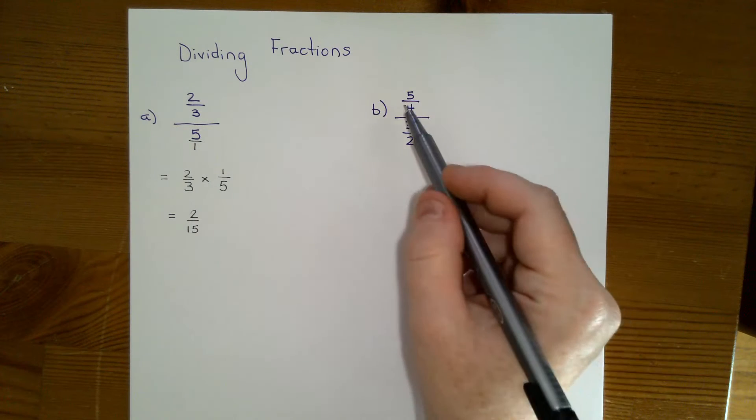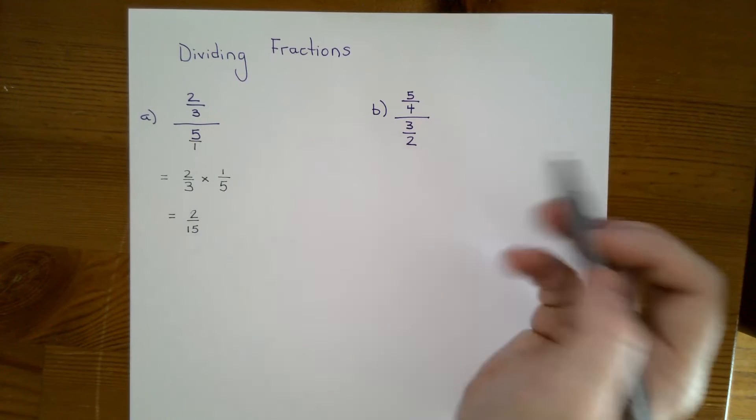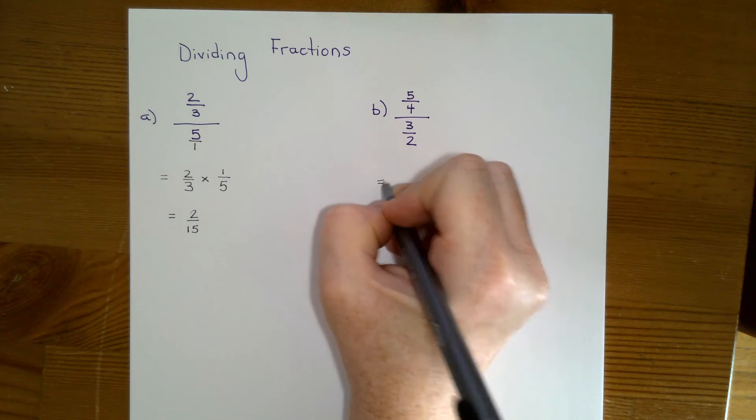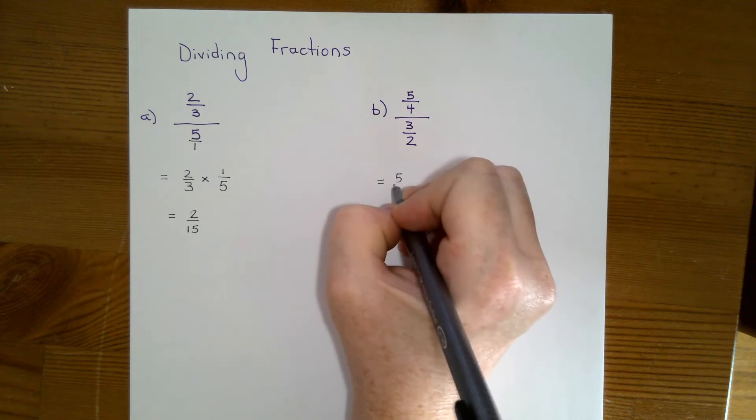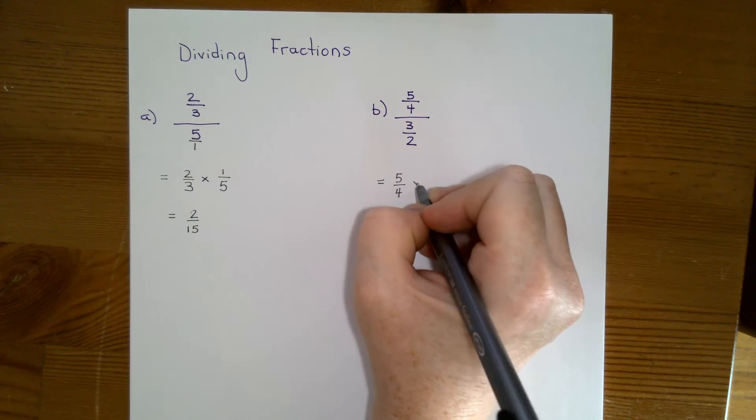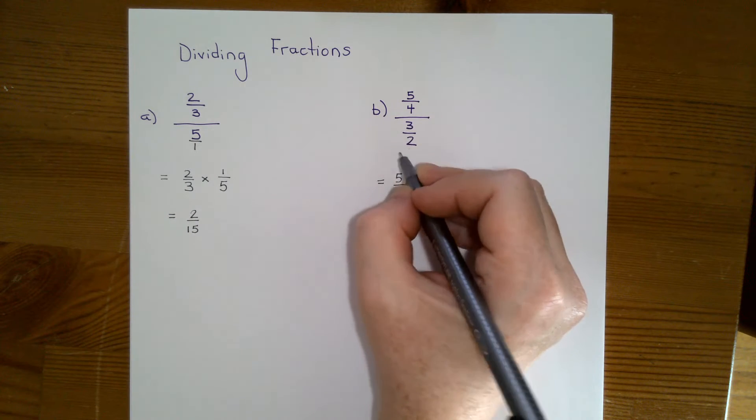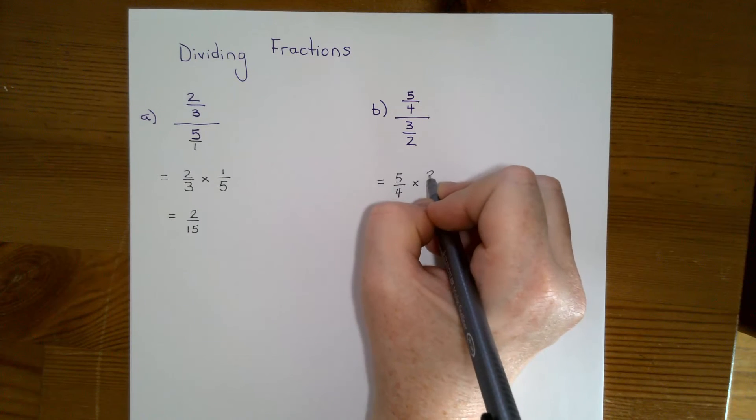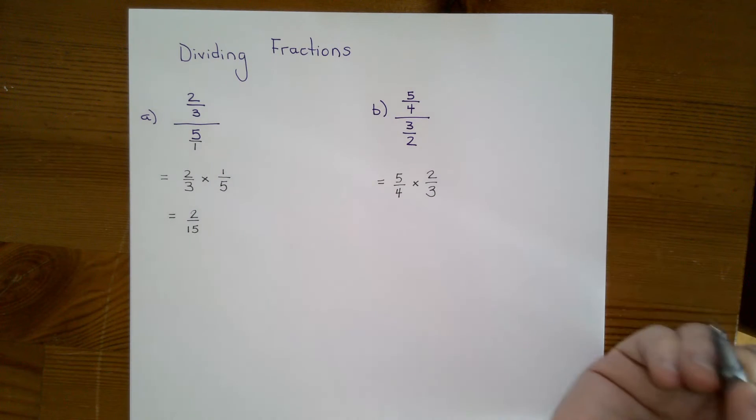Same thing when it's already a fully formed fraction. We're going to turn it into a multiplication question. So we do five fourths times the reciprocal. The reciprocal of three halves is two thirds.